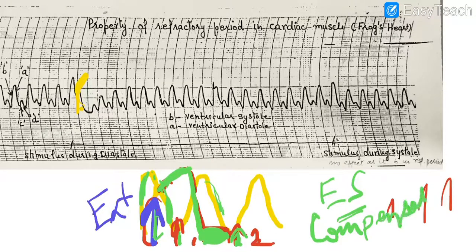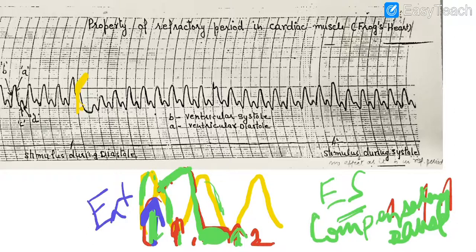This missed cycle is called the compensatory pause. The duration of the compensatory pause is equal to one complete cardiac cycle. It happens because of the extra systole generated by the external stimulus. So: external stimulus results in extra systole, which is followed by a compensatory pause, and the duration of this entire sequence equals one complete cardiac cycle.